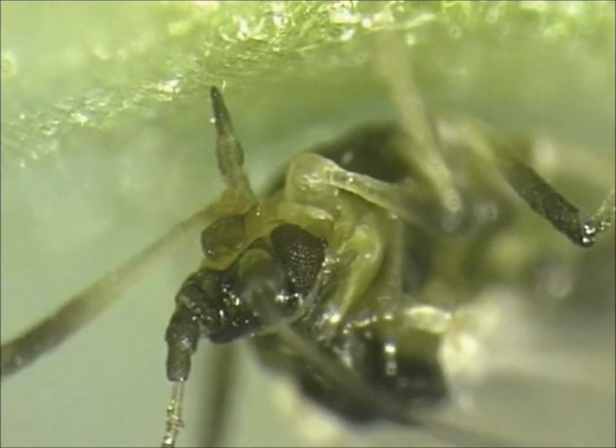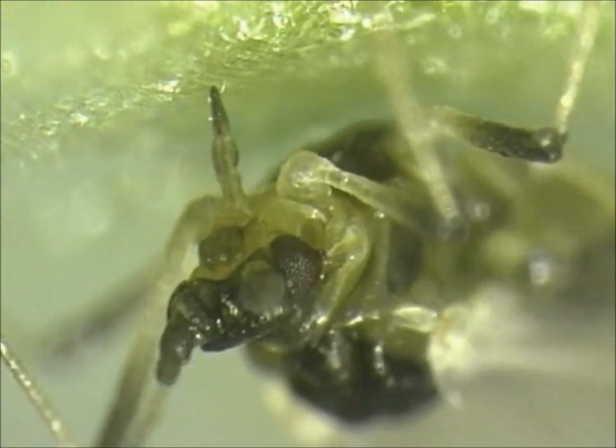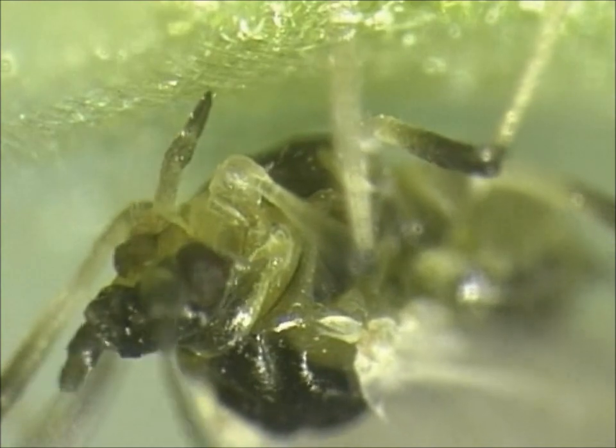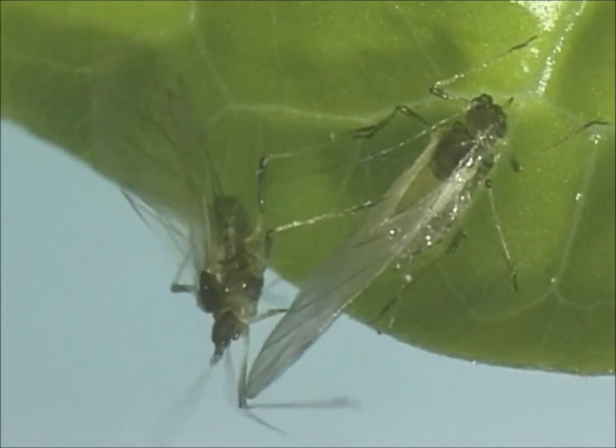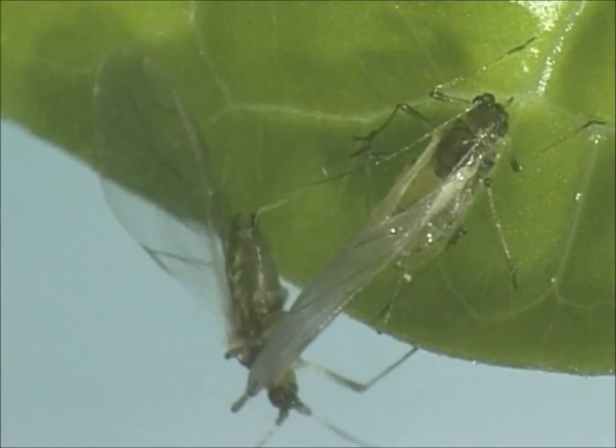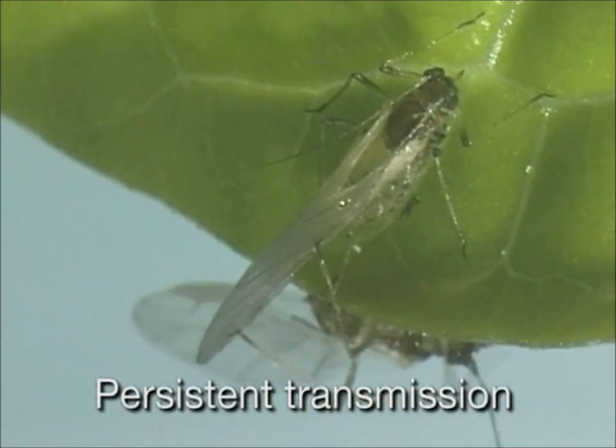These viruliferous aphids transmit the beet mild yellowing virus from plant to plant, along with salivary secretions. The aphid often remains a virus vector for life. For this reason, this type of virus transmission is termed persistent.